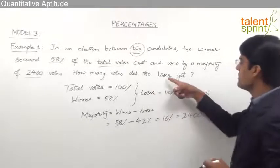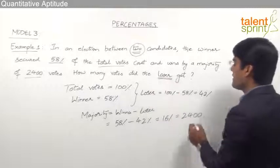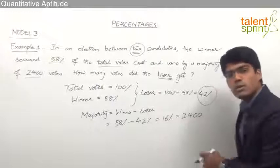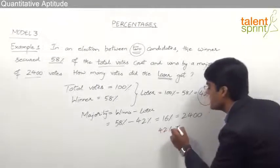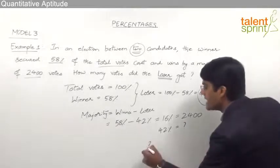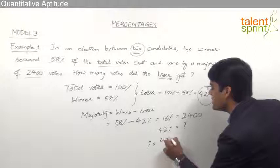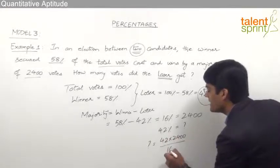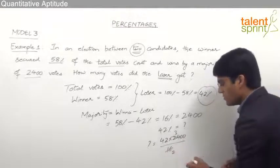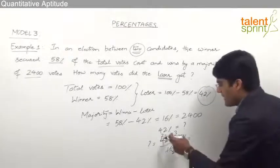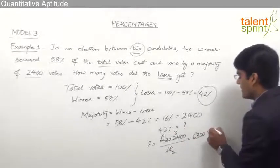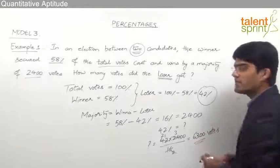We are supposed to find out how many votes the loser got. The loser has obtained 42% of the votes. If 16% is equivalent to 2400, then 42% will be equivalent to what? By cross multiplication, the answer is 42 × 2400 ÷ 16. That gives us 6300. So the loser has got 6300 votes.